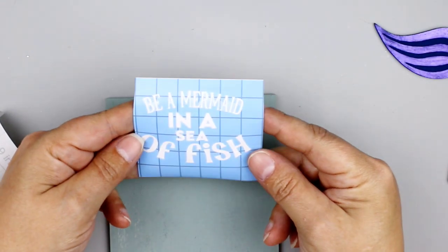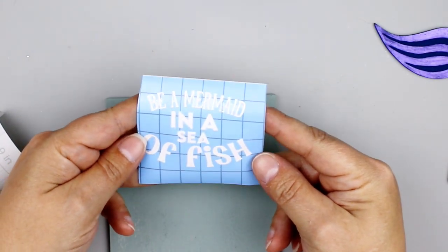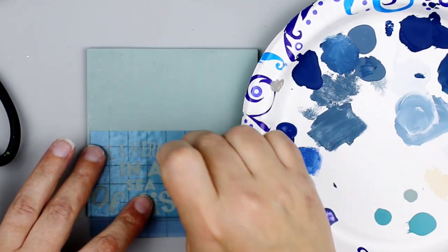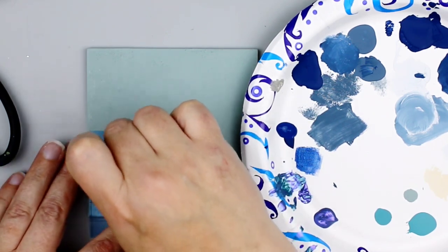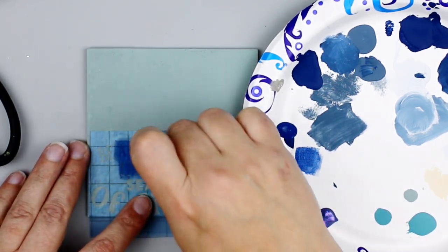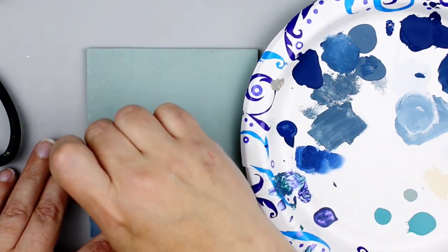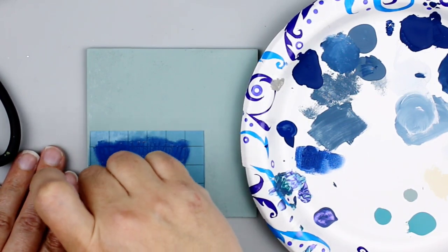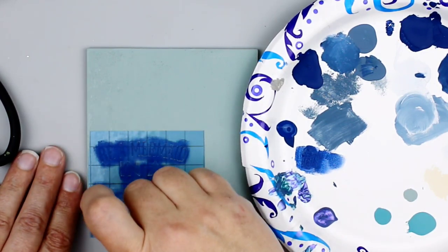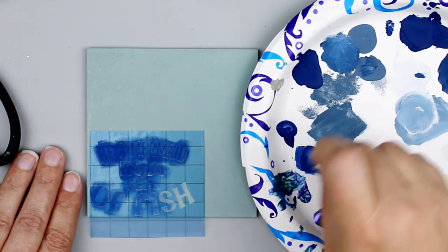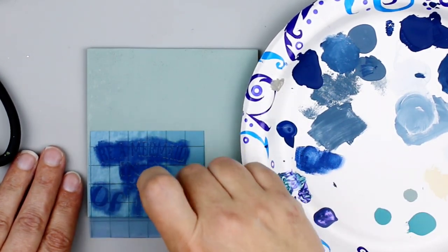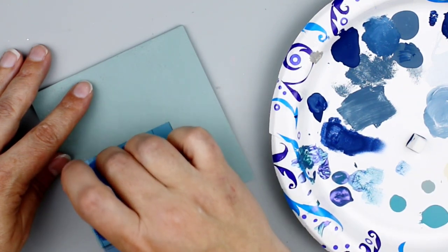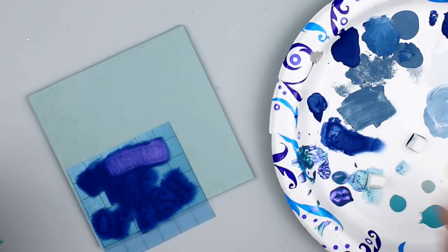Next, I went to my Cricut and I cut out this Be a Mermaid in a Sea of Fish with the Cricut Stencil Vinyl. And if I can find the SVG that I used for that, I will definitely link it below. I'm not sure if it was a design space or if it came from Creative Fabrica. I don't pay for design space anymore. I'm completely Creative Fabrica only. So I will see if I can link it if it is design space. I'm not sure if I can, but I probably should be able to.